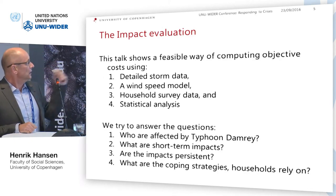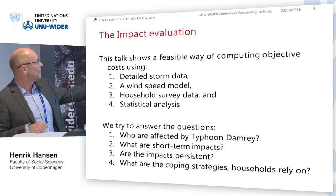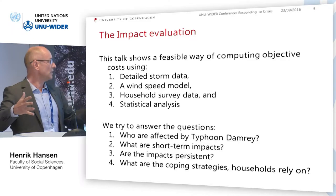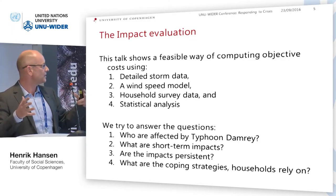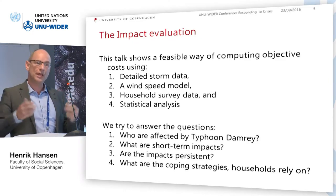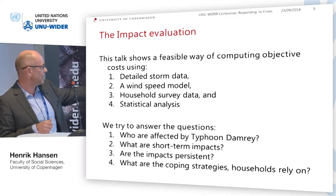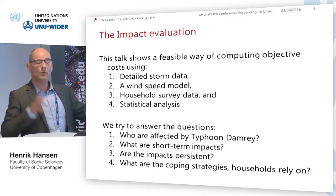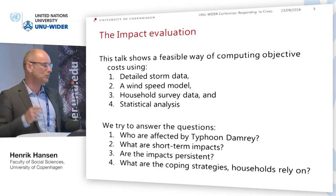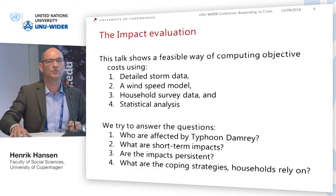We develop a feasible method for computing the objective cost using detailed storm data and a wind speed model from scientists. The wind speed model gives us the disaster area without asking people. We have household survey data from inside and outside the area, and we do a statistical comparison to get an objective measure of cost. We try to answer: who was affected? What were the short-term impacts? Are they persistent? And what coping strategies did households use?